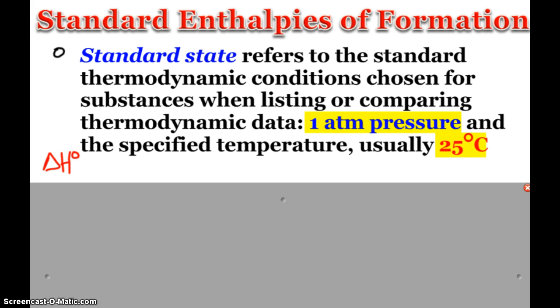Now you also have to deal with sometimes an allotropic form. Carbon, for example, can be graphite, which is the normal allotropic form, the most common allotropic form of carbon.